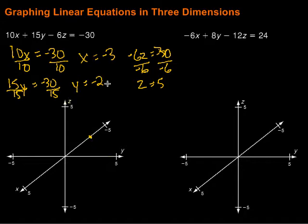Then we want to find the y-intercept on the y-axis, so negative 2. So that means we're going to go back to about right here. Then finally, I find the z-intercept, which is 5, so that's right up here.